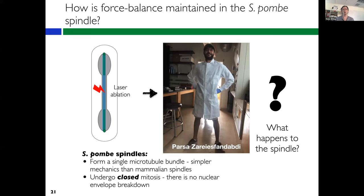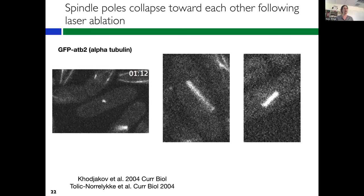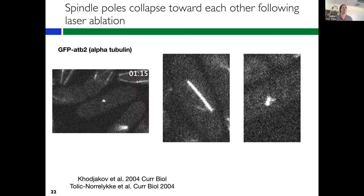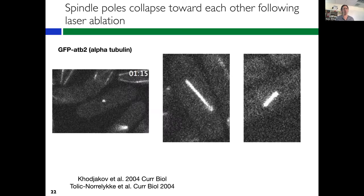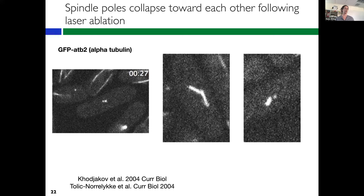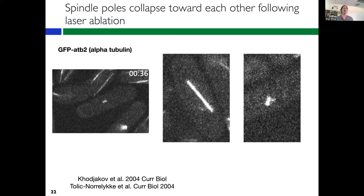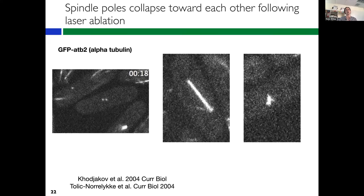This is work from an undergraduate in my lab, Parsas Arias-Fantabadi. The initial response we saw after cutting the spindle is that the poles seem to collapse together. This happens whether we cut short spindles or long spindles. This collapse had been previously observed in the literature, but the molecular source of this response had not been previously described. The prior assumption was that pressure on the nucleus trying to relax back into a spherical shape was probably what caused this collapse, but I'm going to show you data suggesting that's not what's going on.